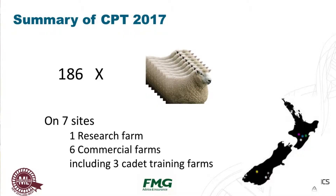We've been implementing this since 2016, and this was the first site to start with the Next Generation site — a really good flagship for us. In 2017 we had 186 rams on seven sites. Only one of them is a research farm; six are actual commercial farms like this one, and three of them include cadet training farms. So we're getting communication with younger guys coming into farming as well, so they're understanding technology and genetics.